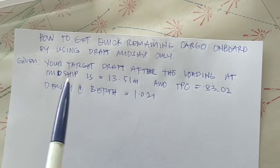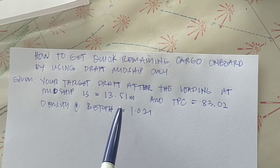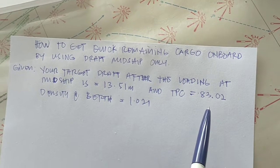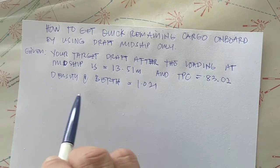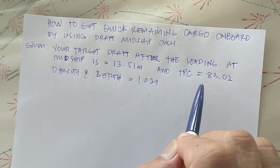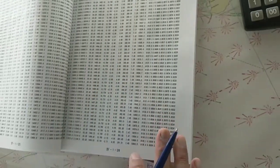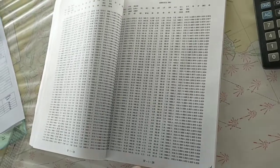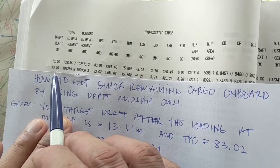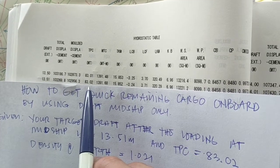So, yung given natin: your target drop after the loading at midship is 13.51, assuming 13.51. And TPC of 83.02. Density at birth at 1.021. So, kunin mo yung TPC base na 13.51 dito sa hydrostatic table. Ito yung drop mo, target drop mo na 13.51, tapos ito yung TPC nya — 83.02.